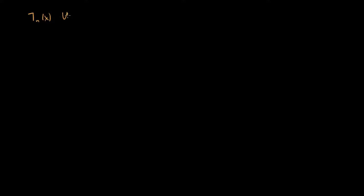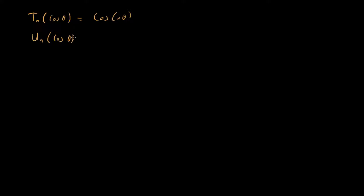What I want to do now is solve for the derivatives of our Chebyshev polynomials — the derivatives of T_n(x) as well as U_n(x). As a quick reminder, how are these defined? The Chebyshev polynomial of the first kind is defined so that cos(nθ) = T_n(cosθ), and the Chebyshev polynomial of the second kind is defined as sin((n+1)θ) / sin(θ).